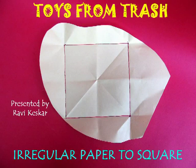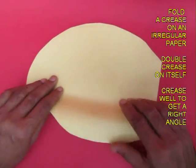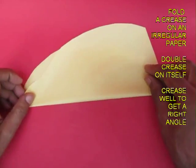You can very easily fold a square from an irregular piece of paper. Take an irregular piece of paper and then fold it roughly in the middle.